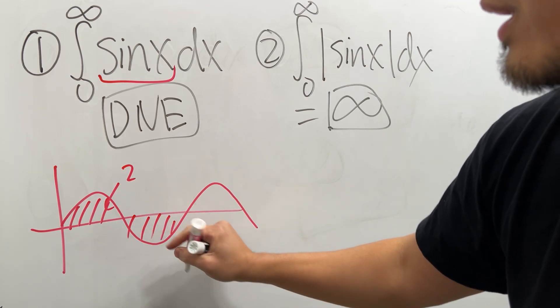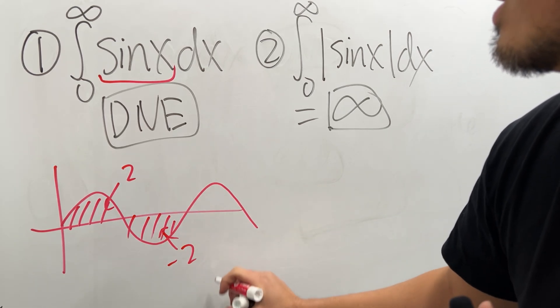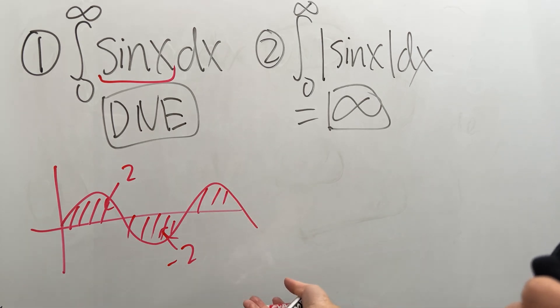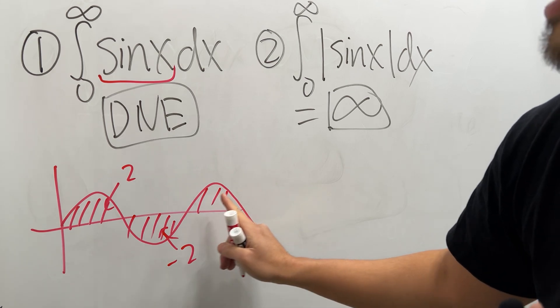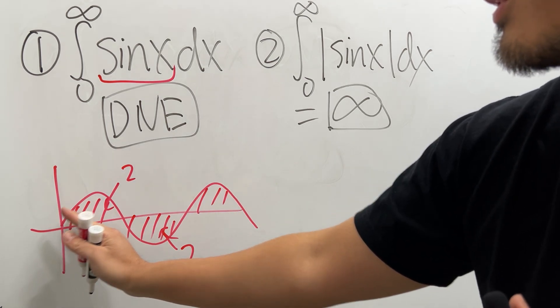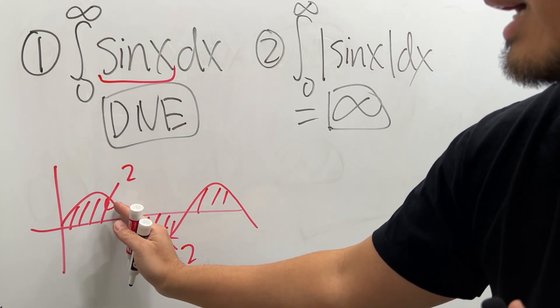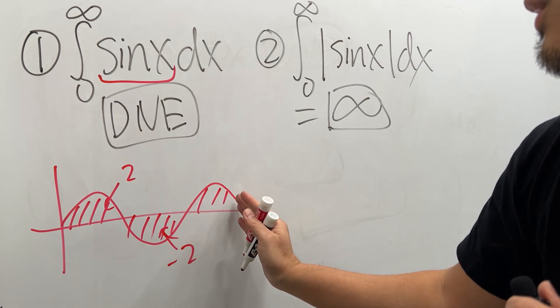And likewise two, negative two, two, negative two. So if you try to calculate the area or the integral from zero to infinity you get two and then once you get to here zero and then you get two again and you get zero. So you do not have a limit for that.